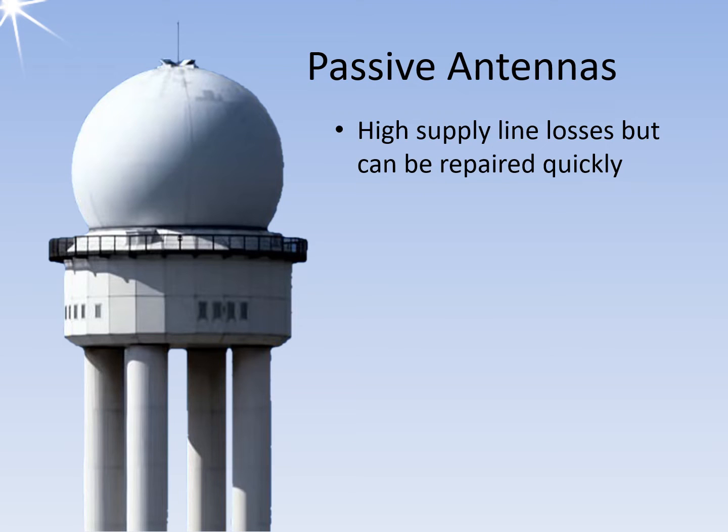Passive antennas are a popular choice for air traffic control because they allow for easy replacement of the amplifier module without interrupting the radar rotation or shutting down the system. Although some loss may occur on the feed lines, the advantages of minimal maintenance downtime make passive antennas the preferred option in this context.